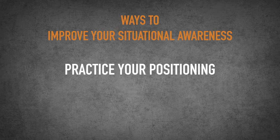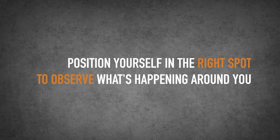Number two is practicing your positioning. In any situation, positioning is everything. In the OODA loop, they talk about orientating yourself to your terrain. Position yourself in the right spot to observe what's happening around you. Maybe you go into a restaurant and you think, to have the best situational awareness, I need to sit with my back to a wall and be able to observe better. Or maybe you're in a crowded area — as you move through that area, think about the position that keeps you from being surrounded by potential bad guys.